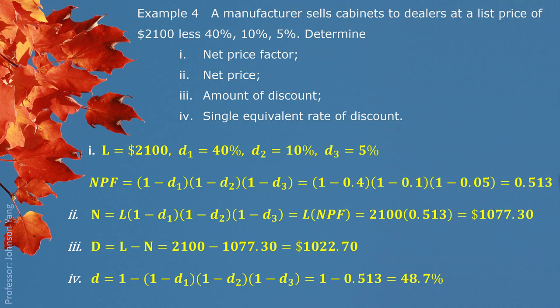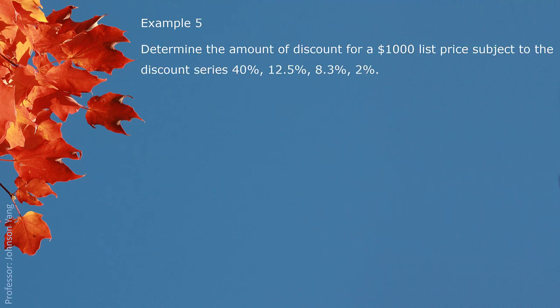There is also an alternative way: since in part 3 we already calculated the discount in dollars, you can use $1022.70 divided by the original list price of $2100, and you can get the same rate of discount as well.